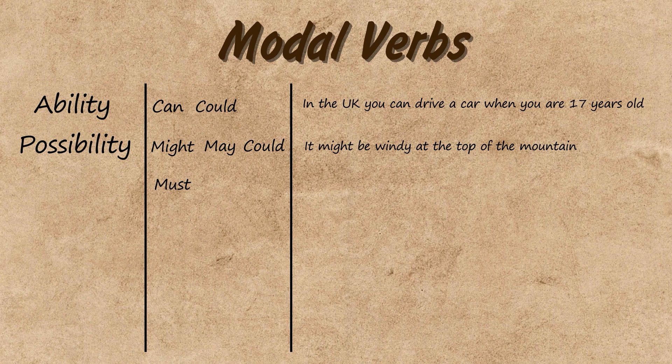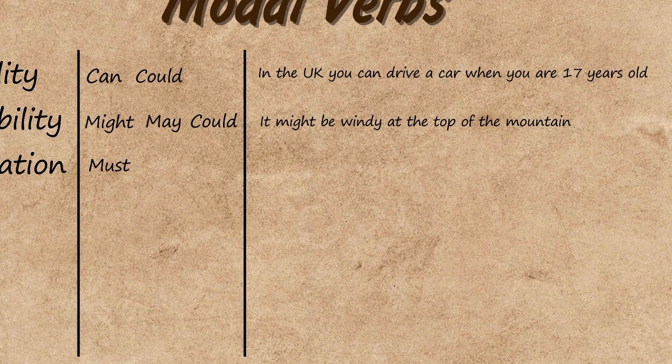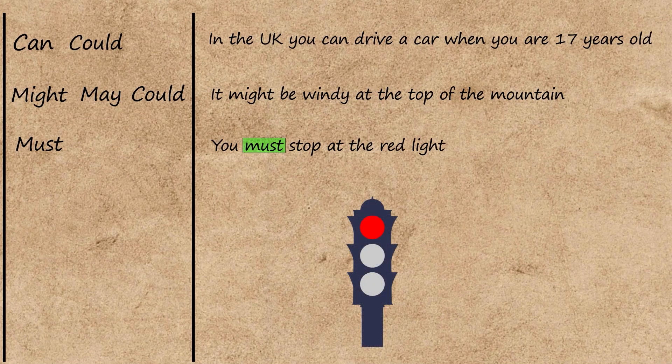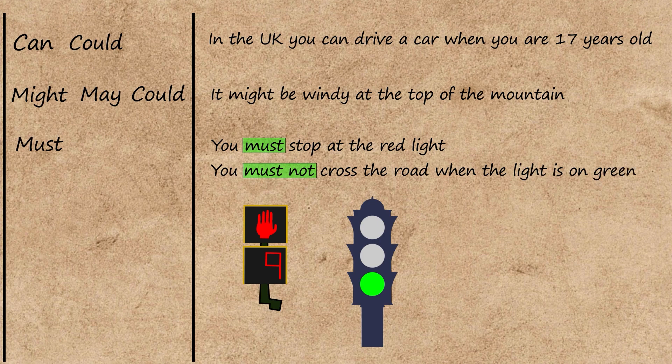Must can be used to express an obligation to do something. For example, you must stop at the red light. We can also use the negative to express prohibition, which means an obligation not to do something. To make the negative we add not after the modal verb. For example, you must not cross the road when the traffic light is on green.